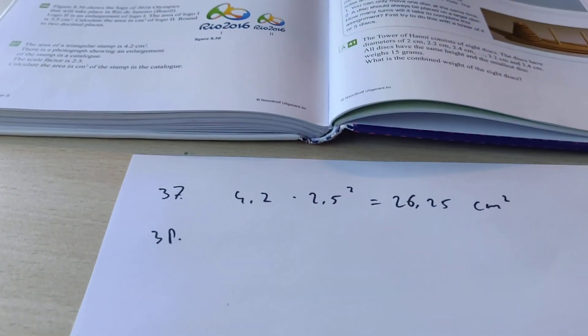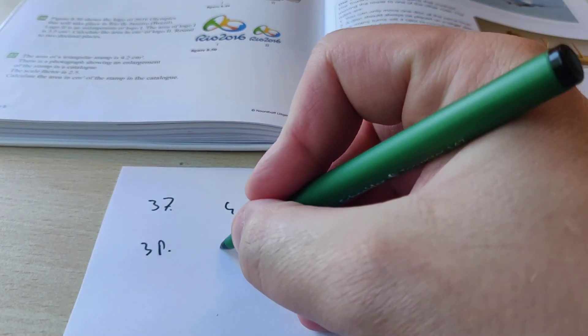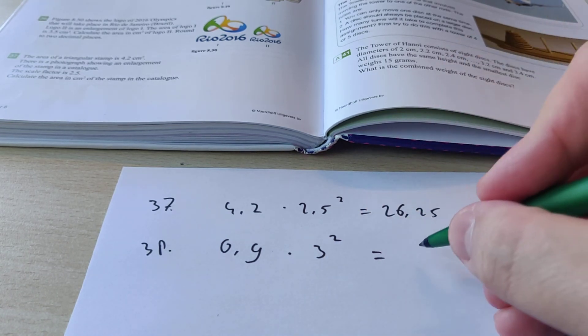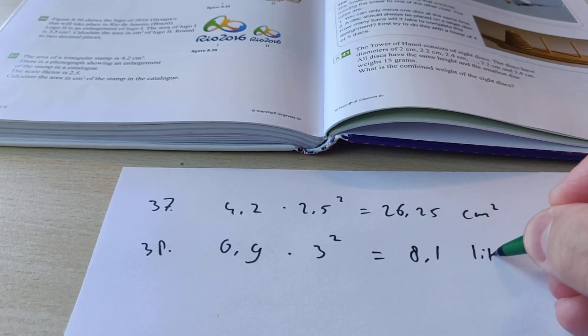So the amount of paint you need is 0.9 times 3 squared. And then you get 8.1 liters.